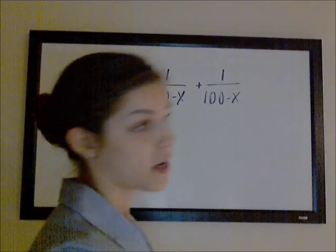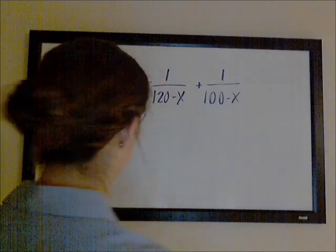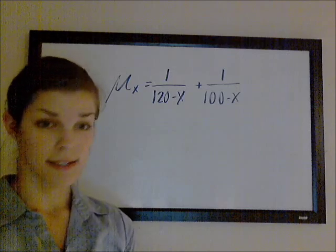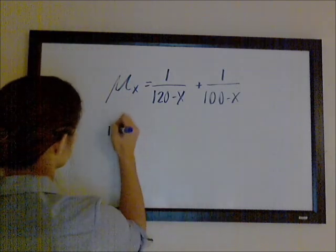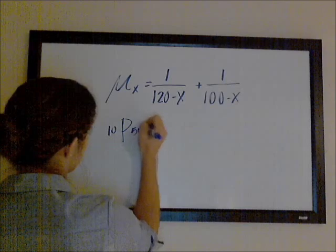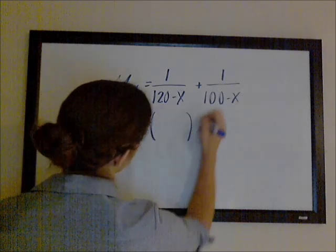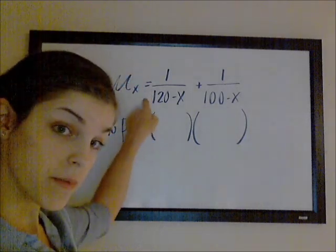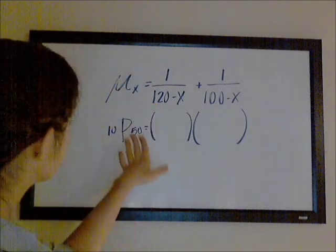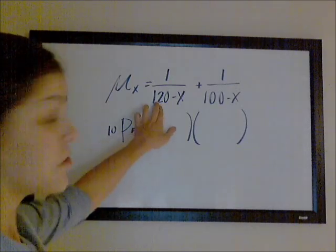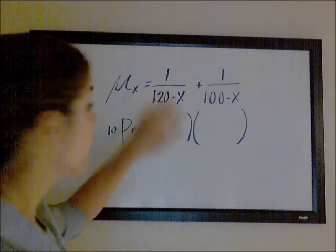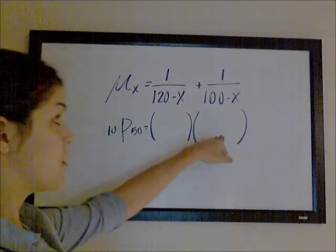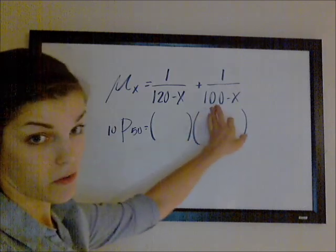For example, you're trying to find the probability that a 50-year-old with this force of mortality survives at least 10 more years. Then 10P50 would be the product of the 10P50 that corresponds to a de Moivre distribution with limiting age 120, and the 10P50 for a de Moivre distribution with limiting age 100.